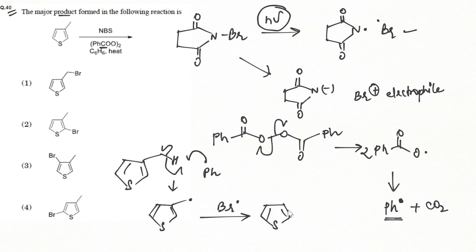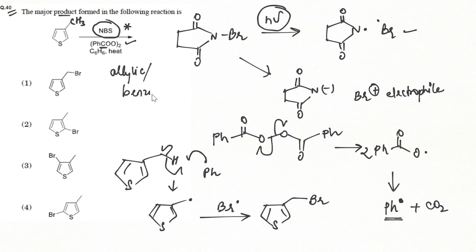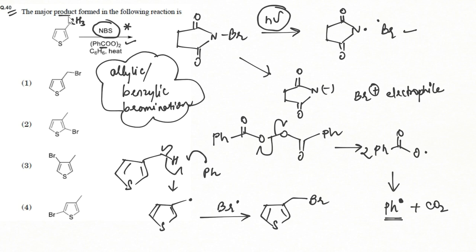To summarize: NBS in the presence of light or a radical generator like benzoyl peroxide gives allylic or benzylic bromination. This is the specific reaction of NBS, and the allylic position in this thiophene derivative is where bromination occurs. This radical is the most stable compared to radicals at any other position, due to resonance. So the answer is option number one.